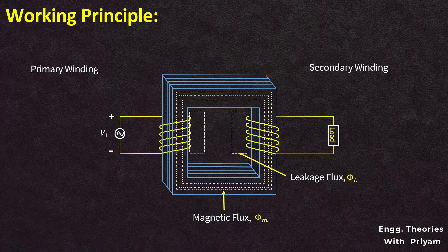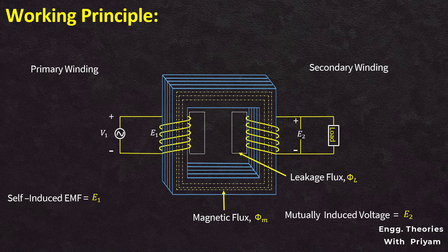Most of the flux gets linked with the secondary winding and is known as useful flux or main flux; the flux that does not link with the secondary winding is called leakage flux. Since the flux produced is alternating in nature, with its direction continuously changing, EMF gets induced in both windings according to Faraday's law of electromagnetic induction. Consequently, the self-induced EMF E1 and the mutually induced EMF E2 are induced in the primary and secondary windings respectively. These EMFs are developed in phase opposition to the applied voltage V1, as per Lenz's law. The self-induced EMF E1 is also called back EMF. If the secondary winding is a closed circuit, mutually induced current flows through it, and electrical energy is transferred from the primary to the secondary circuit.